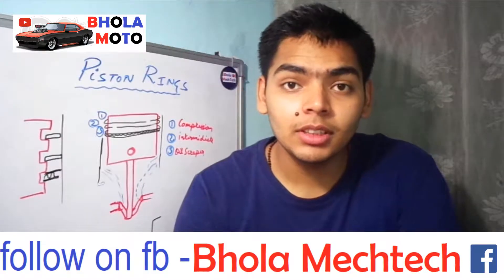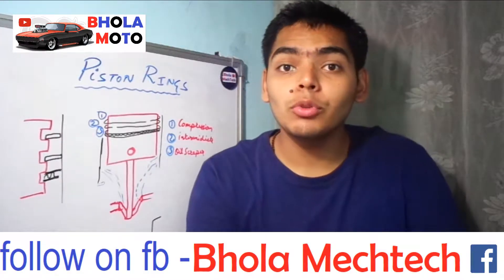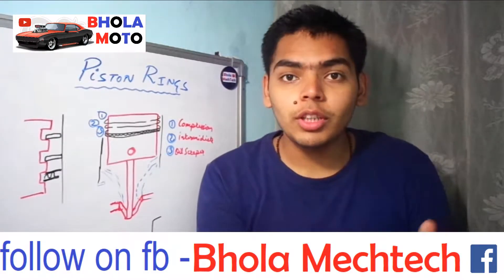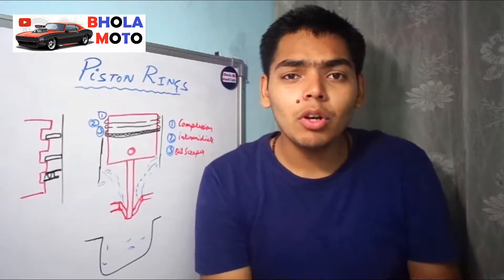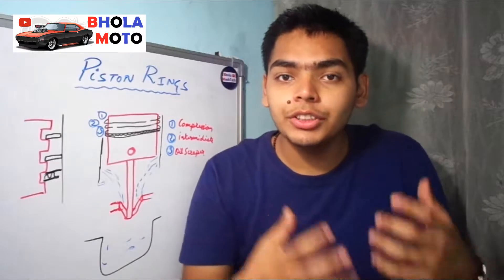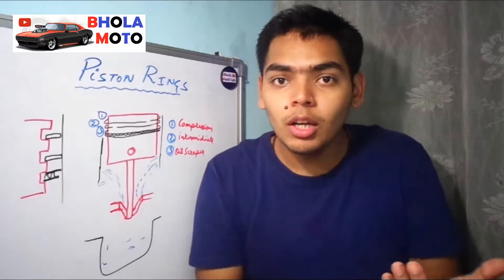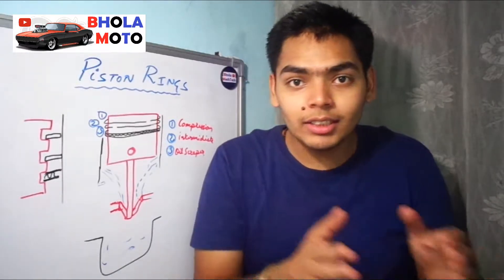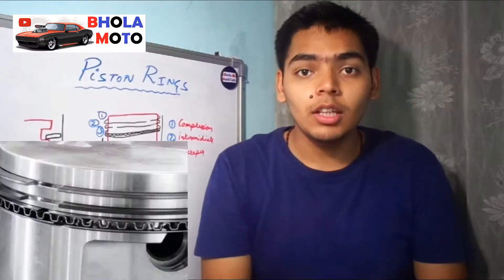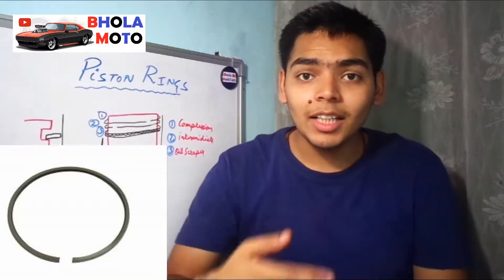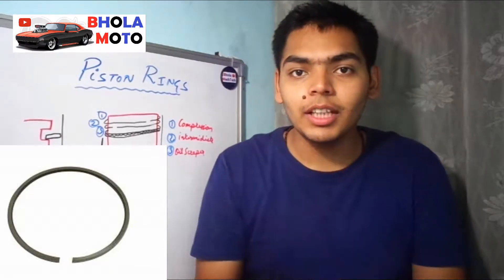There are basically three piston rings in almost every engine. Previously, in two-stroke engines there were two piston rings, likely because they lubricate the engine only by mixing oil in the fuel. But in four-stroke engines it is completely different, so that's why they use three piston rings. The first is the compression ring, the second is the intermediate ring, and the third is the oil scraper ring.